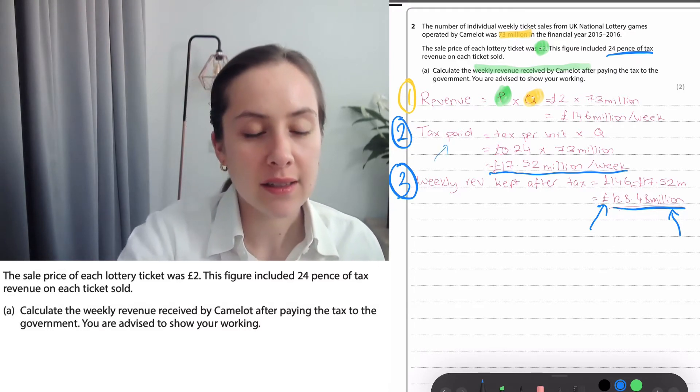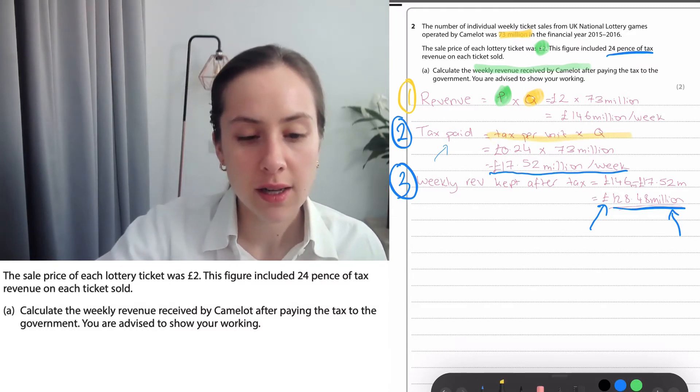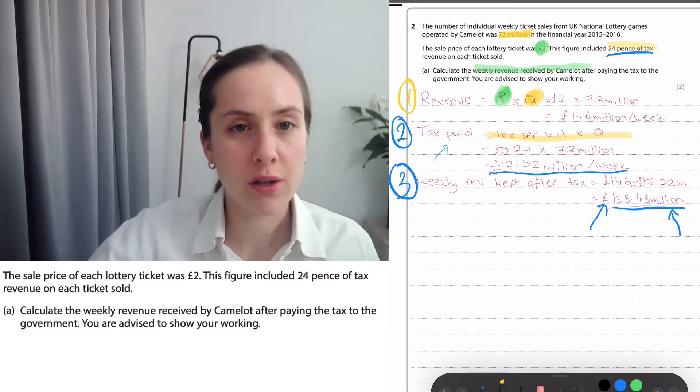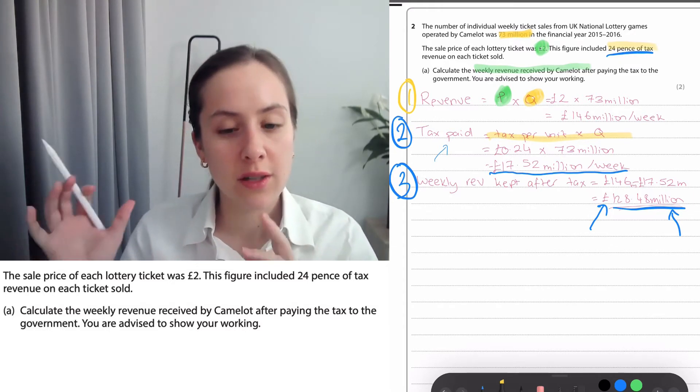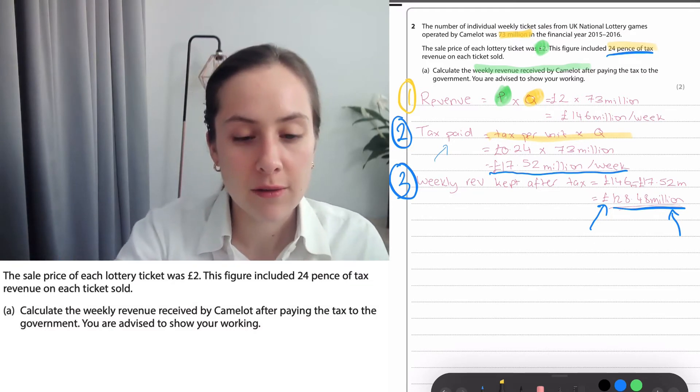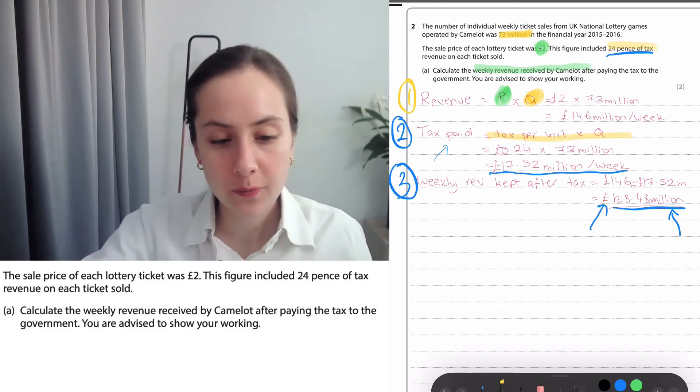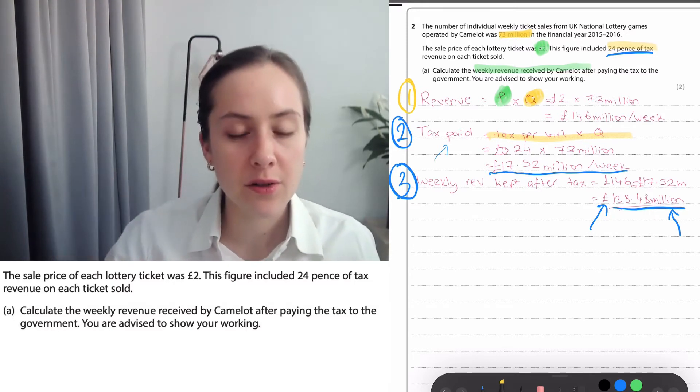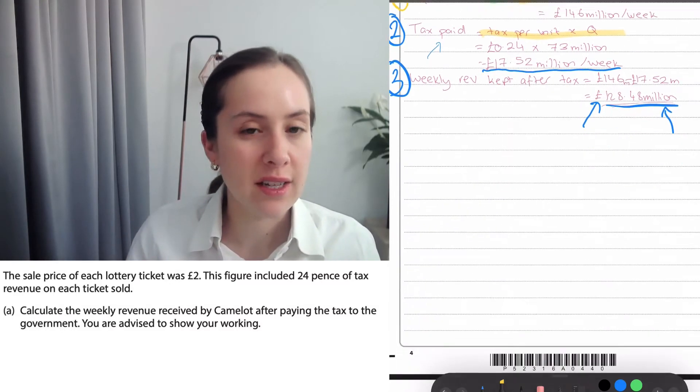Calculating the tax paid: you calculate it by doing the tax charged per unit, which is 24 pence, times the units that were actually taxed, which is the units sold. So that is 24 pence times 73 million, which gives us 17.52 million. And then you do 146 million minus the 17.52, and then you see how much money you were able to keep after the tax.